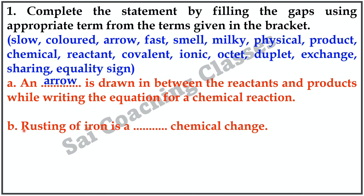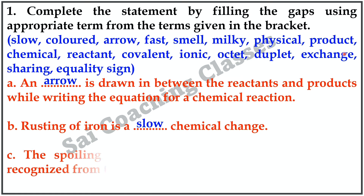B. Rusting of iron is a dot dot chemical change. Answer: Slow.